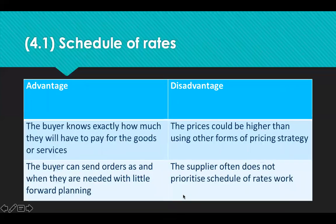Let's look at schedule of rates. Kasia can't decide if she wants carpet or laminate flooring in her flat, but she knows the maximum amount of money she can spend. She asks a local floor fitter to supply a schedule of rates so she can compare prices per square metre for materials and fitting of the two different methods. The schedule of rates helps her decide because she can see the price per square metre and compare costs easily. The advantages are that the buyer knows exactly how much they will pay, and can send orders as and when needed with very little forward planning. But the downside is the price could rise and could be higher than using other forms of strategy, and suppliers often don't prioritise schedule of rates work over those paying a much higher price.